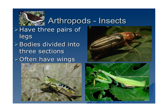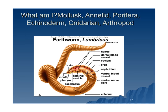Insects have three pairs of legs, and their bodies are divided into three sections, whereas spiders or arachnids had two sections. A lot of times insects will have wings. The next several slides are going to quiz you — they'll show you a picture of an animal and you're going to identify whether it's a mollusk, annelid, porifera, echinoderm, cnidarian, or arthropod. Do it over and over until those characteristics start to stick. Later you're going to go to Nearpod and take a graded activity.